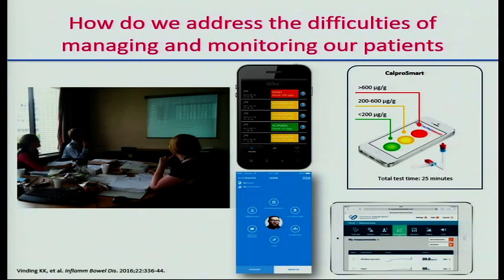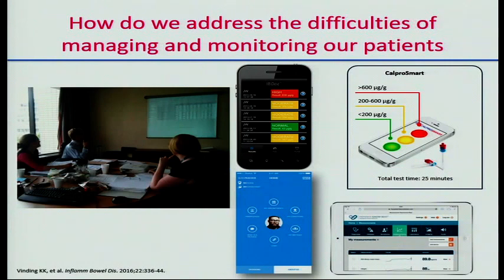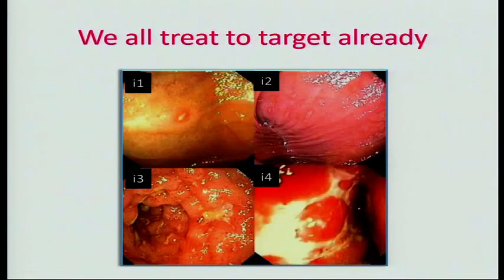We must also consider the pressure this puts on us as healthcare providers. Treating to target means tight control not only of the patient's disease but of monitoring as well. We need to know what's going on, which requires a lot of work — whether through virtual clinics, information technology, apps, or home testing of calprotectin. Clearly this will involve quite a lot of work, but we're lucky to be in an age when information technology can help us in this regard.